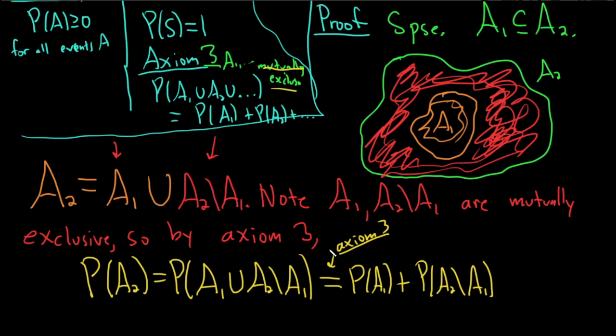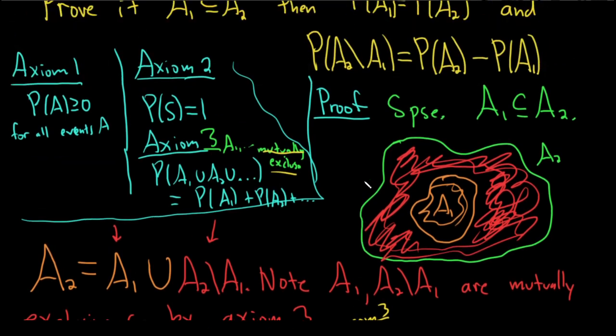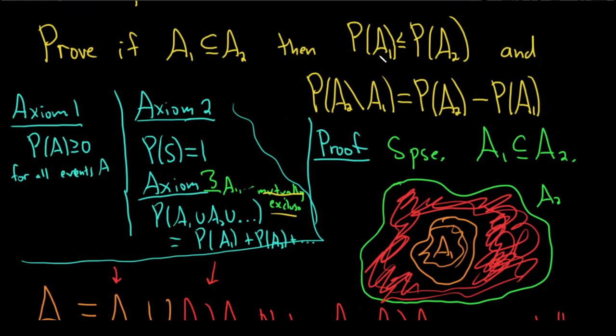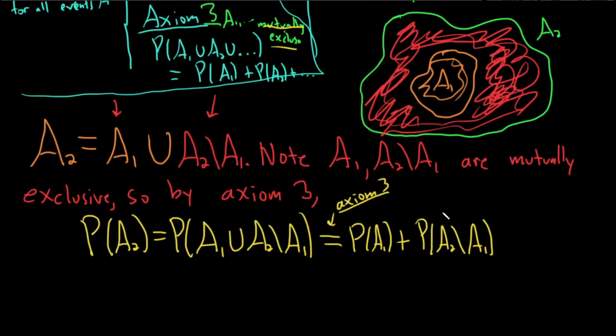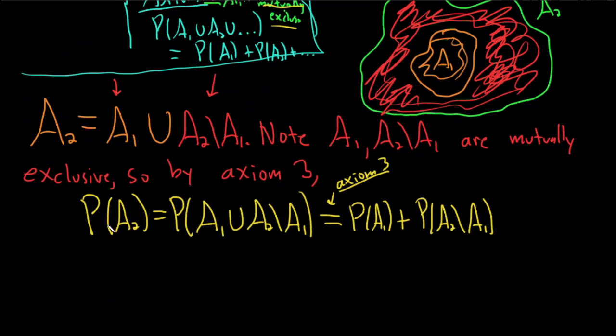Okay, let's see if we can show our first thing. Our first thing was that P of A1 is less than or equal to P of A2. So basically, here we have P of A2, here we have P of A1. We need to get rid of this. Well, we know something about this, right? This is greater than or equal to 0 by axiom 1.